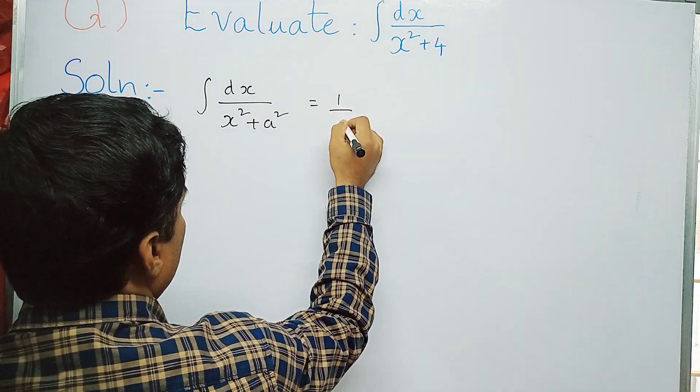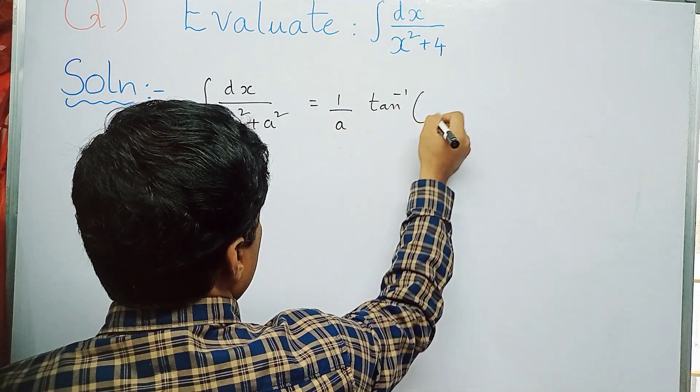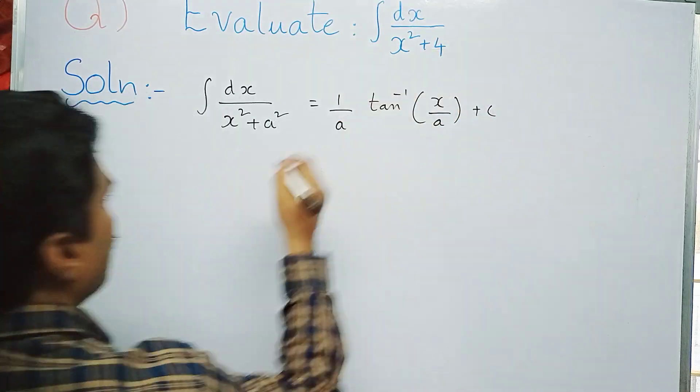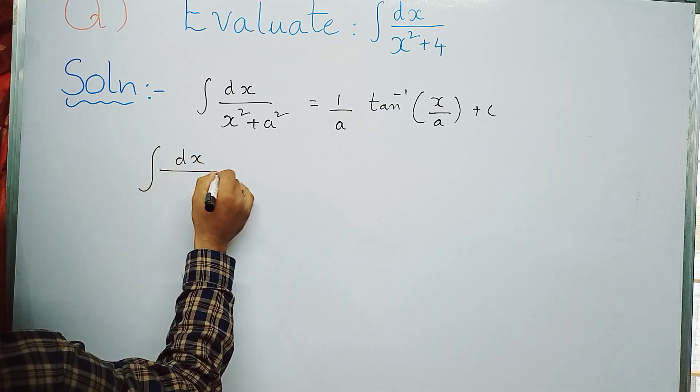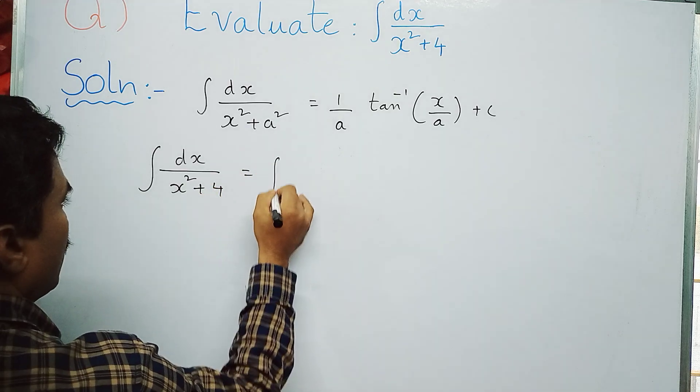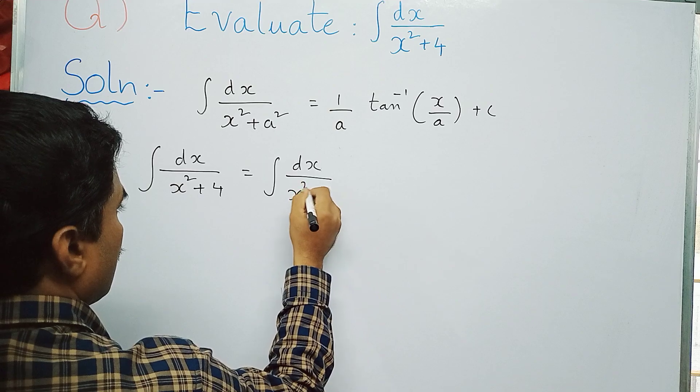Equal to 1 by a tan inverse x by a plus c. Now you can write the given problem, that is integral dx by x squared plus 4 can be written as integral dx by...